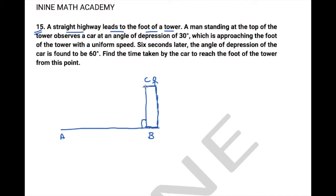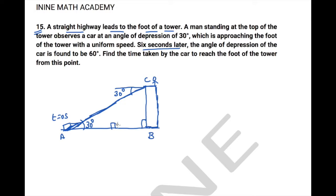Since the height of the man is not given, we assume and ignore his height. The angle of depression of a car — let's say the car is at A — is 30 degrees. This will also be 30 degrees because of alternate interior angles. The car is approaching the foot of the tower with uniform speed. At t = 0 seconds, six seconds later the angle of depression of the car is found to be 60 degrees, so the car comes closer to the tower.